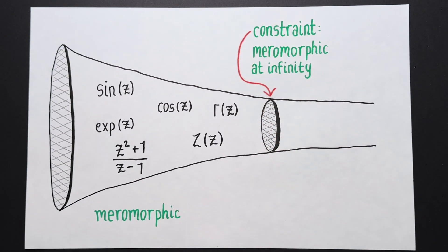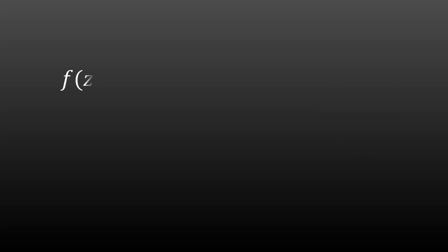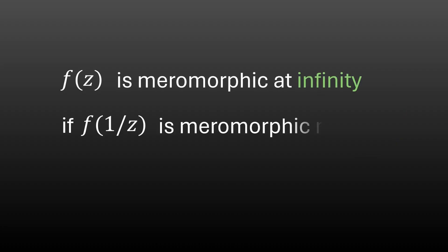Well for that we need a definition. We'll say that a function f of z is meromorphic at infinity if the function f of 1 over z is meromorphic near z equals 0.